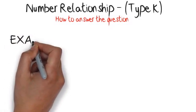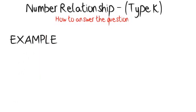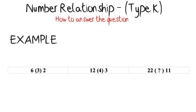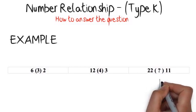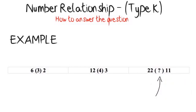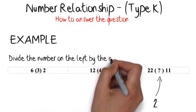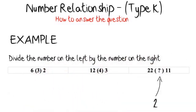Example: 6(3)2, 12(4)3, 22(?)11. What can you do with 6 and 2 to get 3? If you divide 6 by 2 you get 3, so the rule could be: divide the number on the left by the number on the right. Does this rule work for the second group?